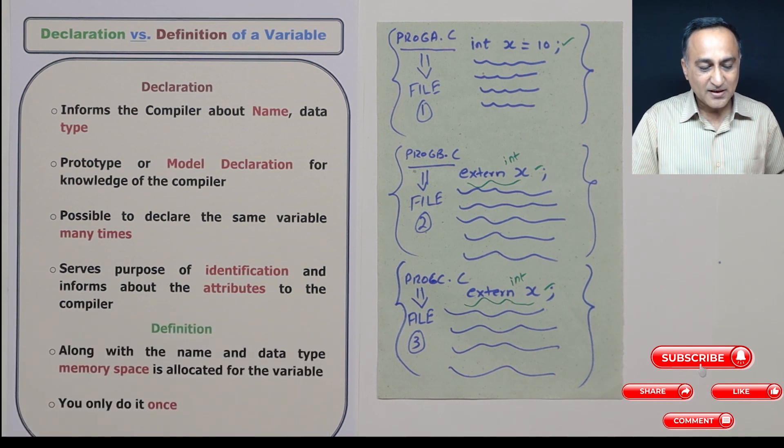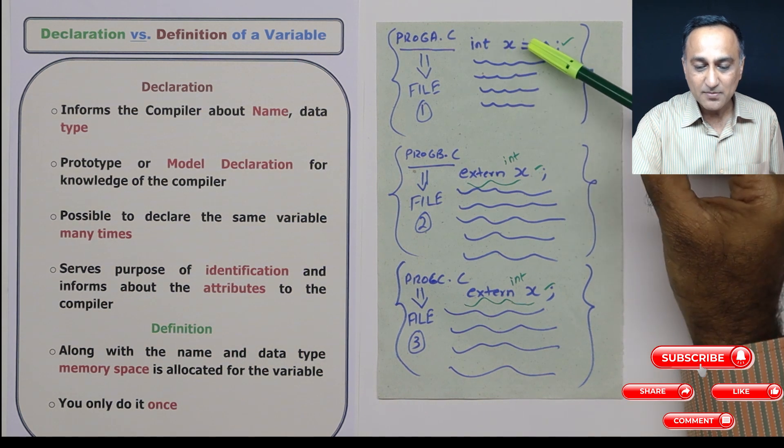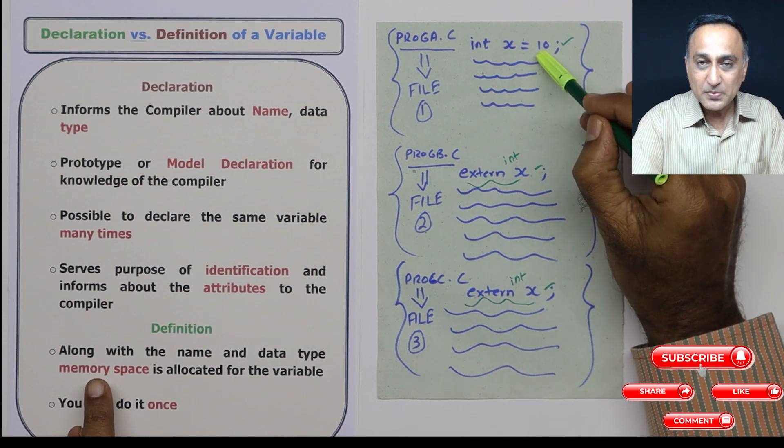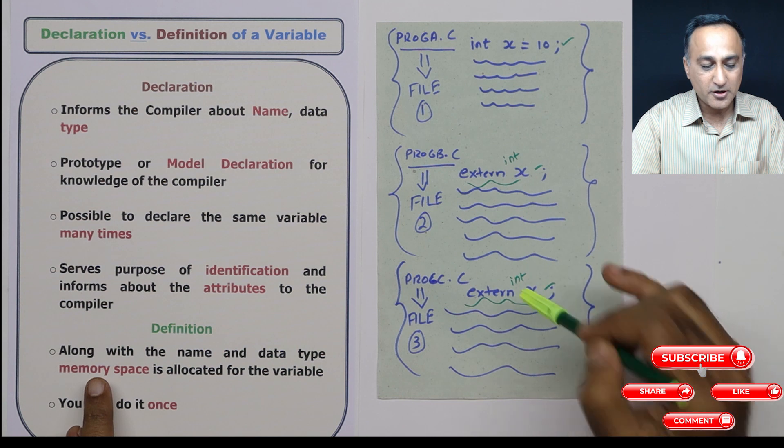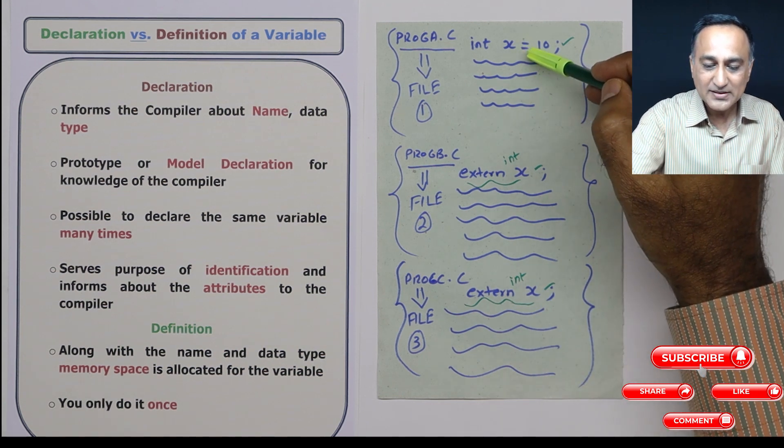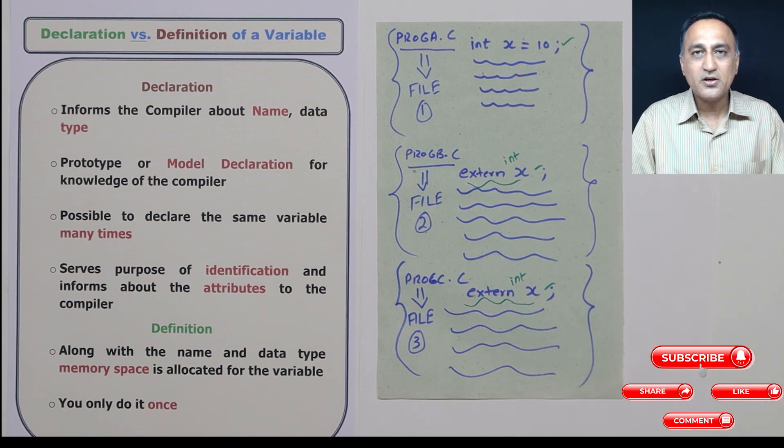Now what is definition? Definition, you give the data type which is integer, you may or may not give it the initial value. But most importantly, memory space is allocated during definition. Memory space is not allocated during declaration. And finally, you only define it once, but you can declare it as many times as you are going to use in your particular code.